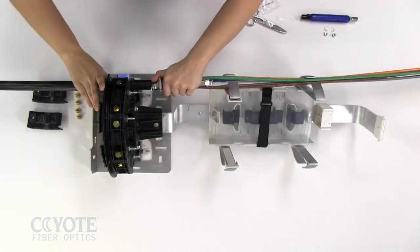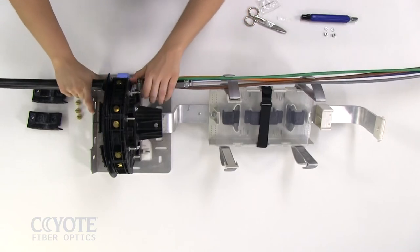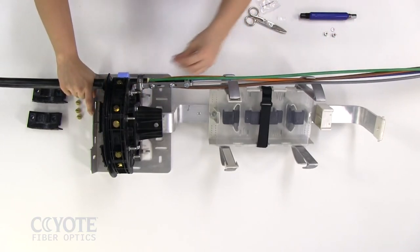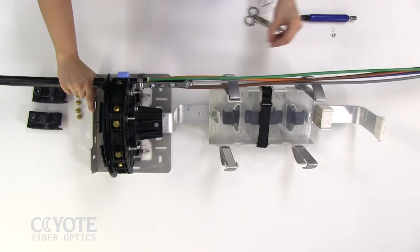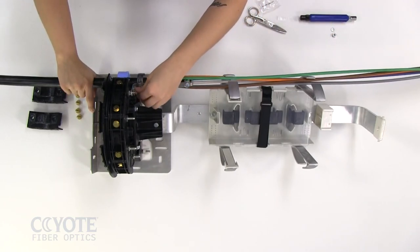Position the leg of the L-bracket over the ground stud and pull back the cable. Loosely secure the L-bracket to the stud using a lock washer and nut.